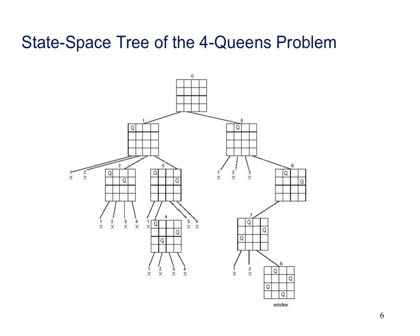Here's the state space tree in a more readable form. You should take a look at it and make sure you understand why the x's are where they are and how the search goes. You come down, come down, can't get anywhere from here, so you backtrack up, do this, come down to here. This won't work, so you backtrack up — this won't work, this won't work. We're done here, backtrack, there are no more possibilities out of this node, go back to the root. Again, it's just depth-first search.